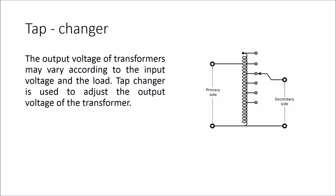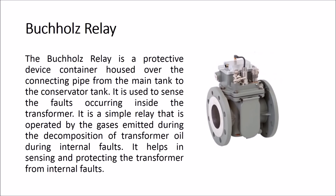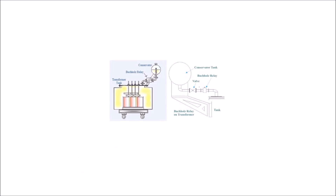The output voltage of a transformer may vary according to the input voltage and the load. The tap changer is used to adjust the output voltage of the transformer. The Buchholz relay is a protective device housed over the connecting pipe from the main tank to the conservator tank. It is used to sense faults occurring inside the transformer. It is a simple relay operated by gases emitted during the decomposition of transformer oil during internal faults, helping in sensing and protecting the transformer from internal faults.